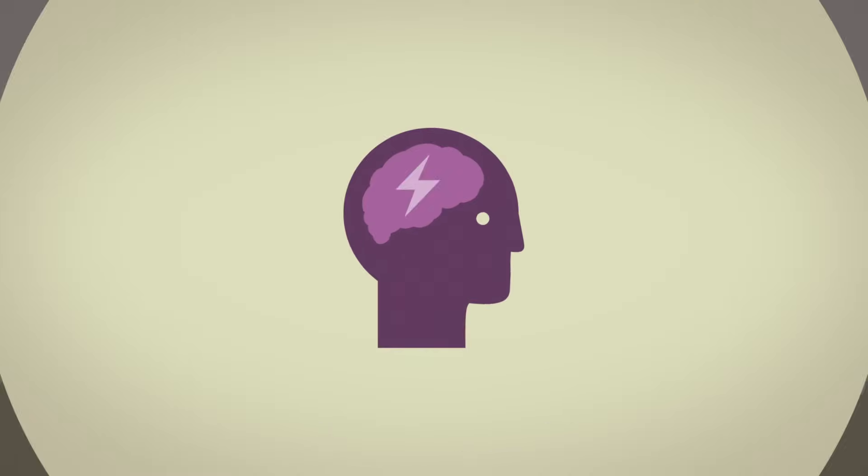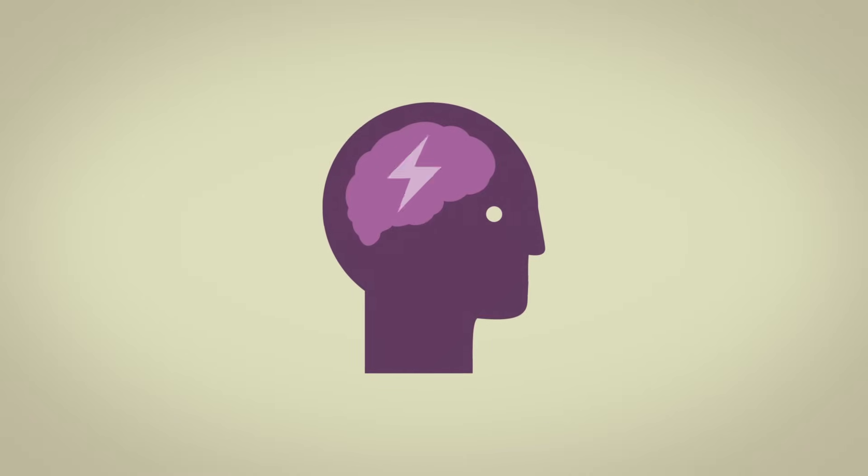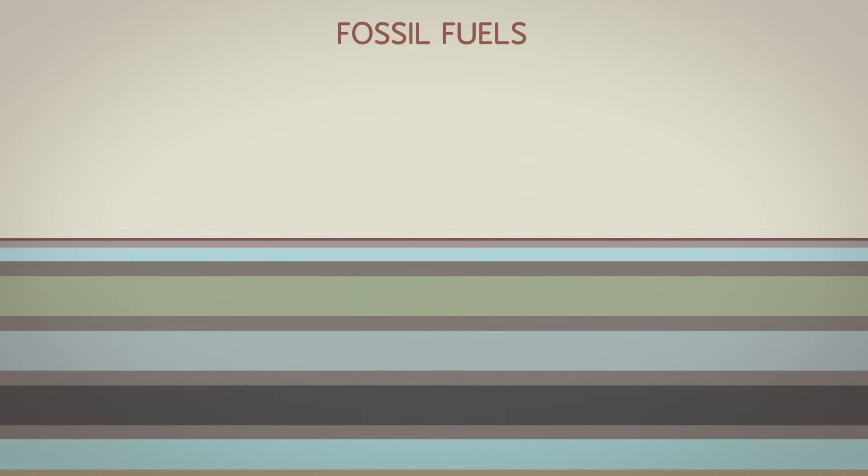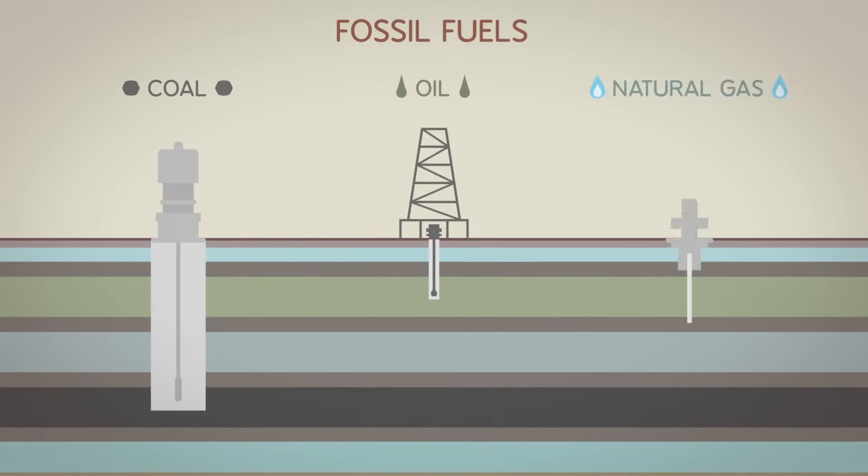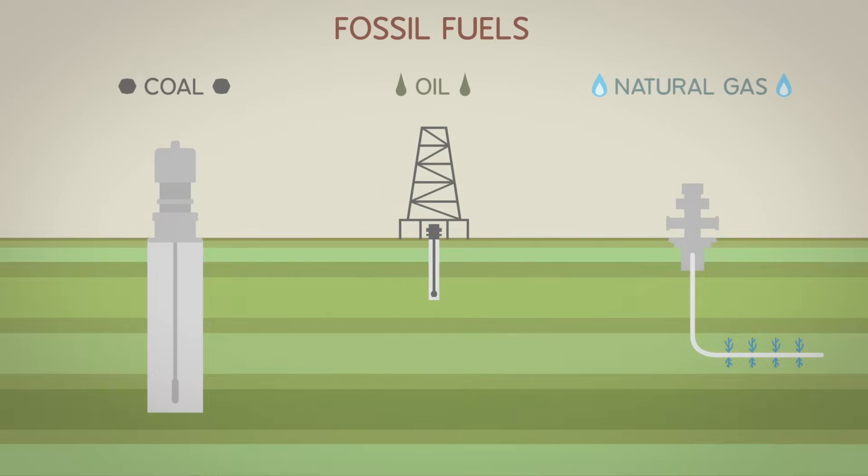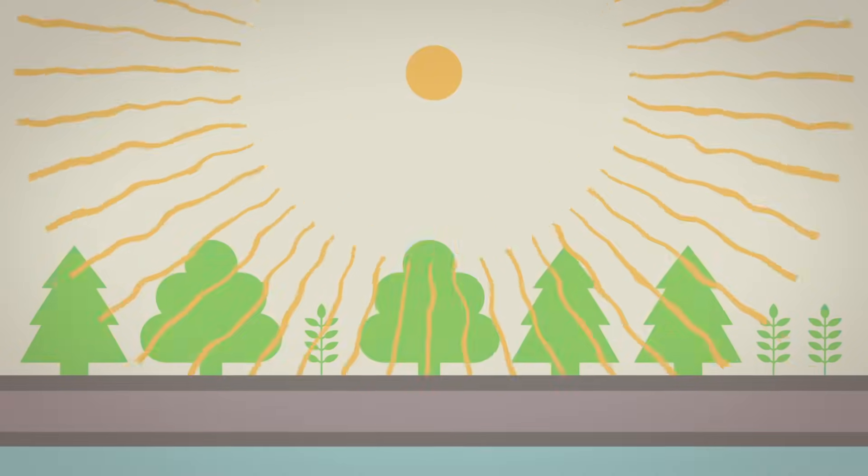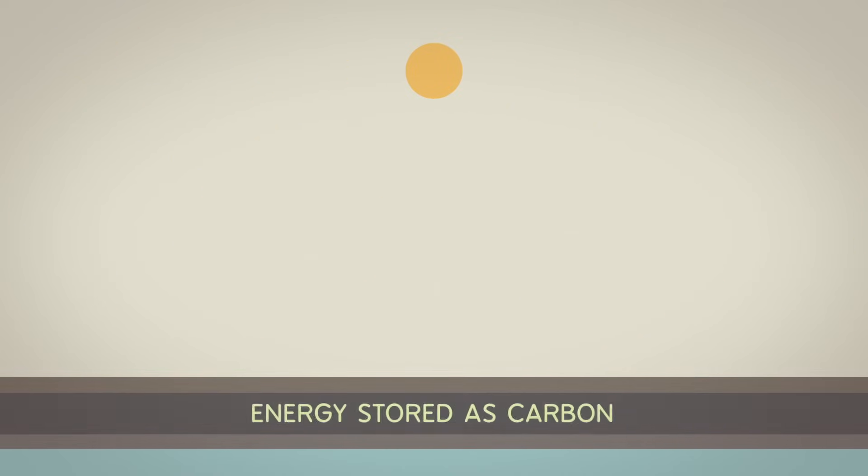We humans, of course, spend our energy doing a lot of things besides eating. We travel, we build, we power all sorts of technology. To do all this, we use sources like fossil fuels, coal, oil, and natural gas, which contain energy that plants captured from sunlight long ago and stored in the form of carbon.